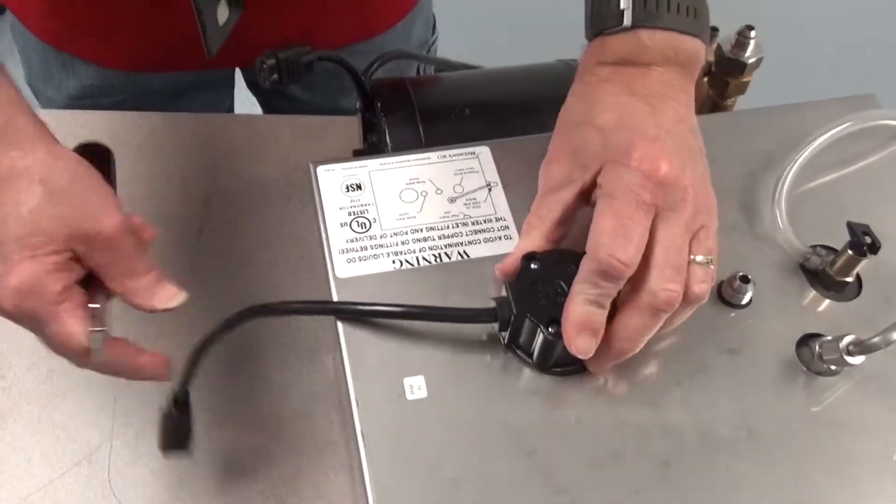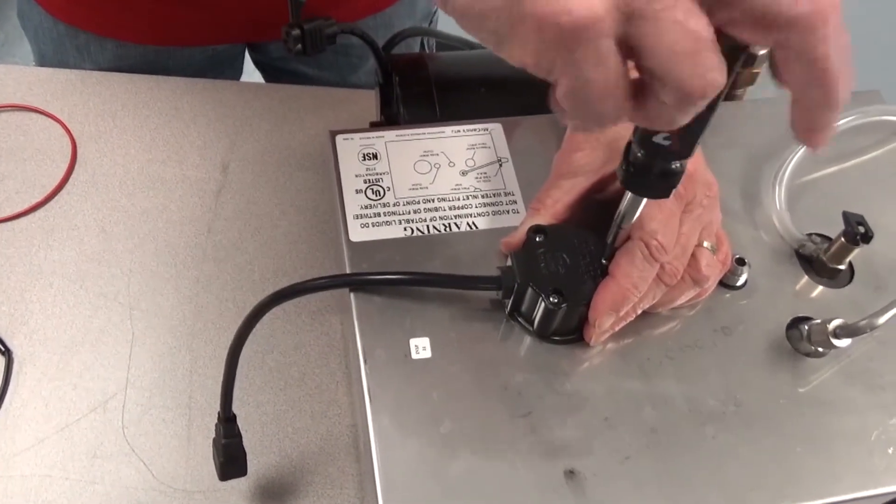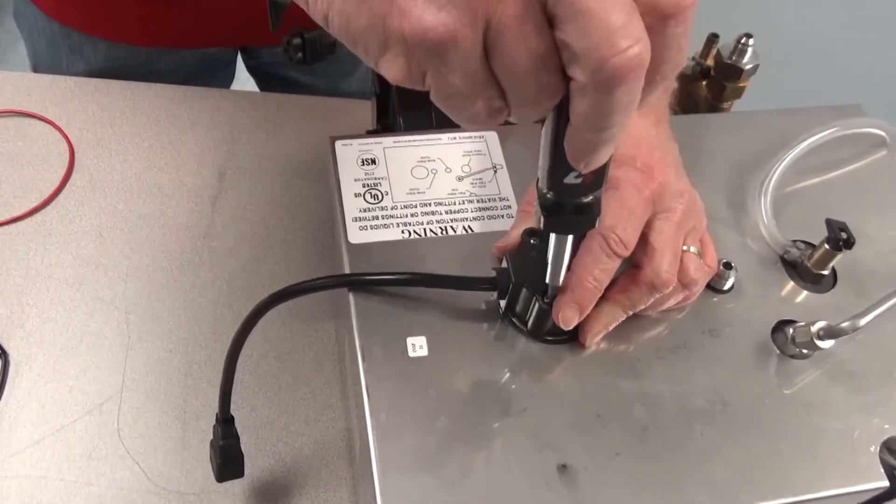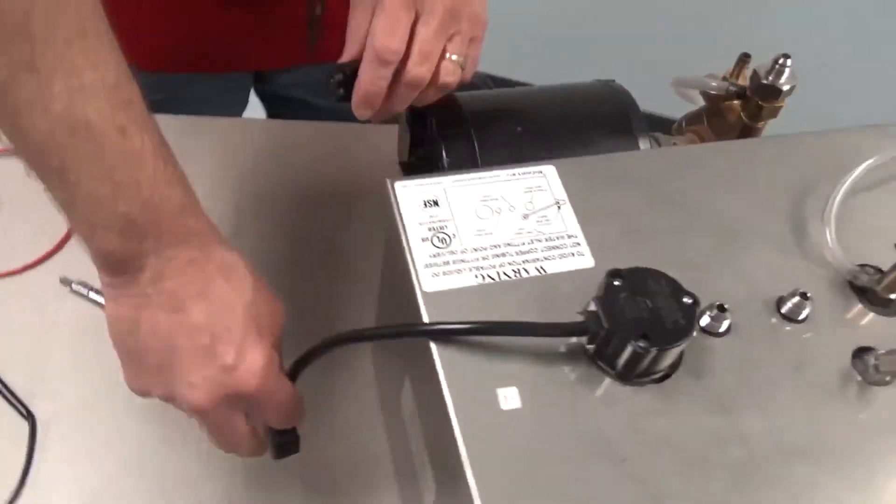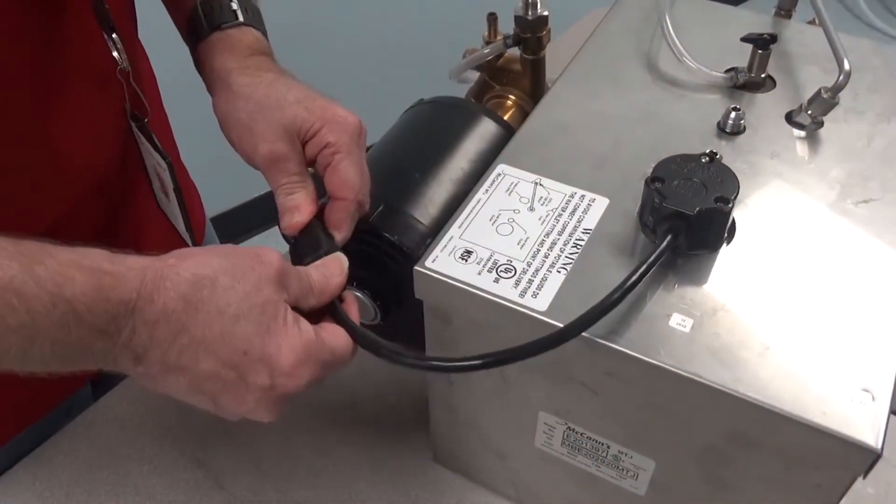Install the new probe with the three Phillips head screws that were removed earlier. Plug in the probe harness to the connection that goes to the motor and test the carbonator by activating a dispensing valve on the dispenser to run carbonated water and make sure the pump and the motor cycle.